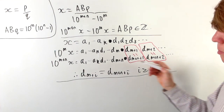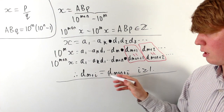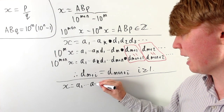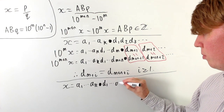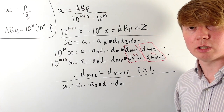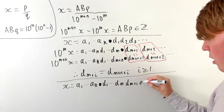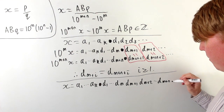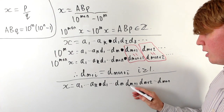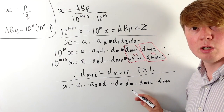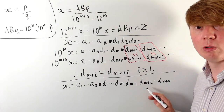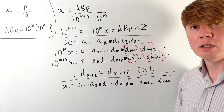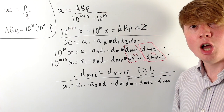So thinking about what our decimal expansion of x actually looks like: we have this structure where the same pattern repeats every n digits. We can write x as a1 up to ak, then the decimal point, then d1 up to dm — which isn't necessarily part of the recurring structure — and then from dm+1 up to dm+n, which then repeats: dm+n+1 equals dm+1, dm+n+2 equals dm+2, and so on. So we've proven that we have this recurring structure, with the pattern repeating every n digits.